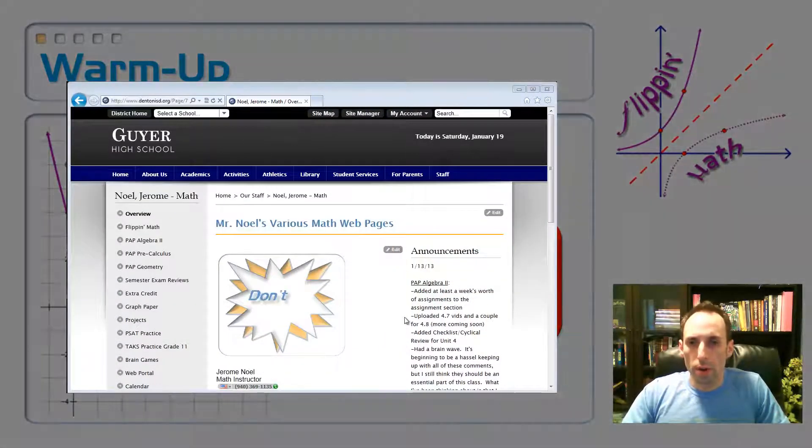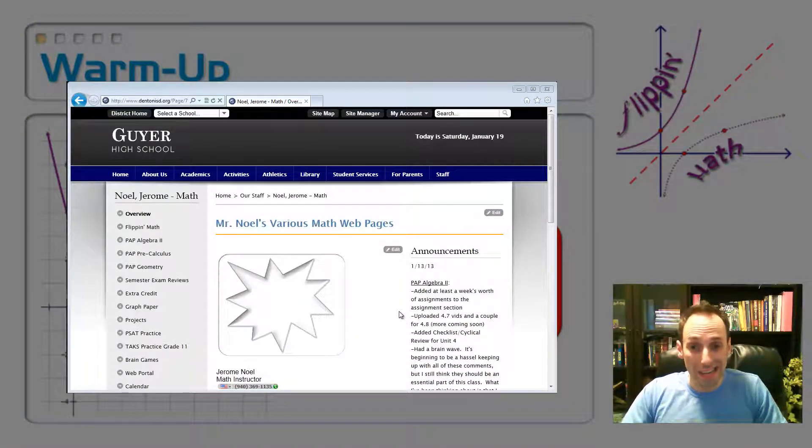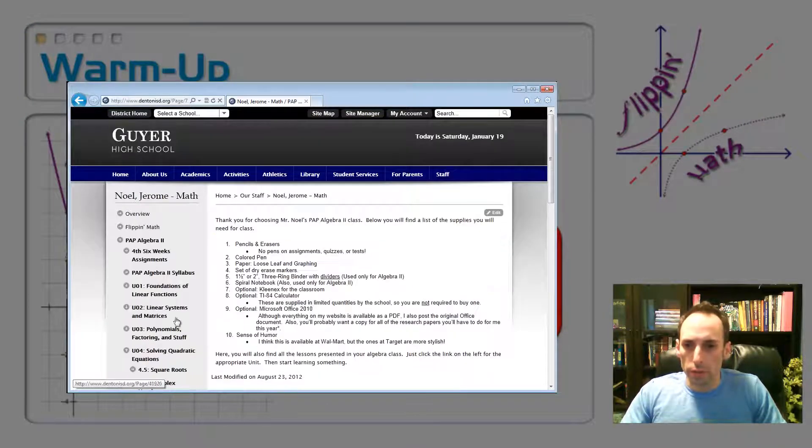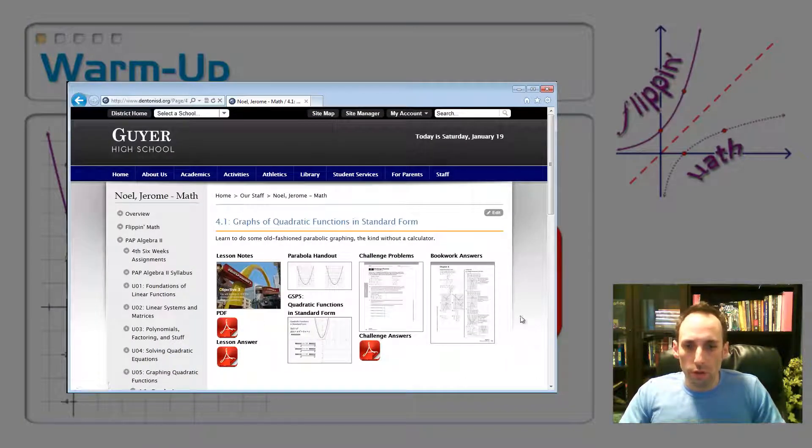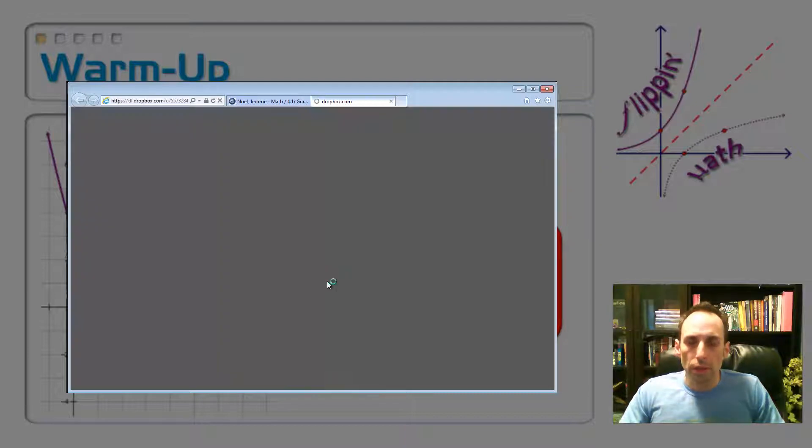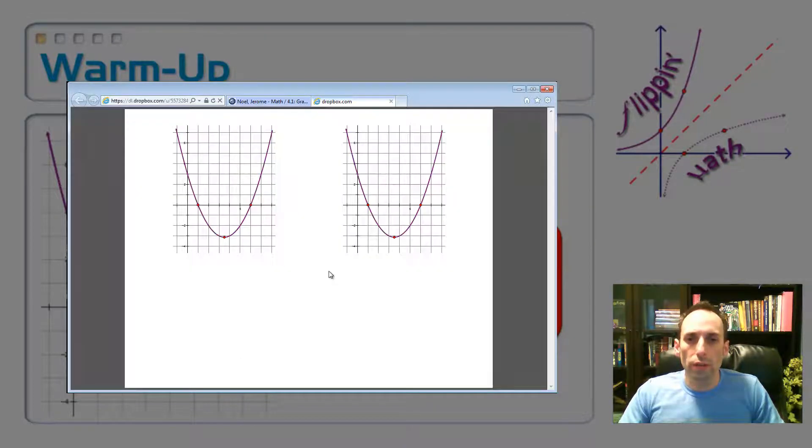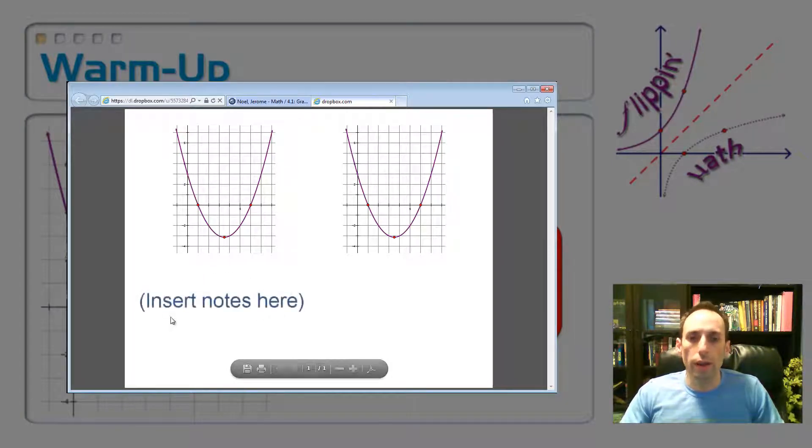All right, so we're at my website. We're going to find our parabola handout, so we go over here to Algebra Two and then scroll down to Unit Five. Within Unit Five we're at 4.1. There's all the stuff associated with this lesson, and then here is the parabola handout. It's a PDF file - just open it. It has two pictures of graphs. When this comes up, just print that thing out. You only need one of them - chop it in half. And all this blank space here, why don't you just go ahead and use that to take some notes on. You can take some notes on the picture of the parabola too.